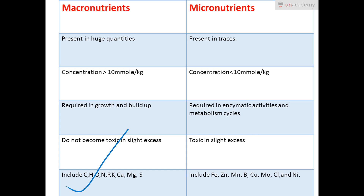Macronutrients consist of carbon, hydrogen, oxygen, nitrogen, phosphorus, potassium, calcium, magnesium, and sulfur. A useful mnemonic to remember this is 'CHON P K CA MG S' — our teacher used to call it 'chon p k ka magus'. You can invent your own tricks if needed, but this is one way to remember C H O N P K CA MG S.